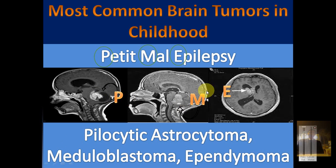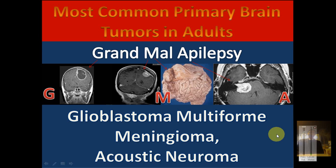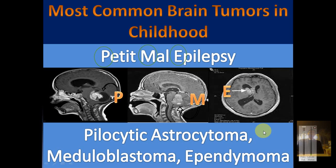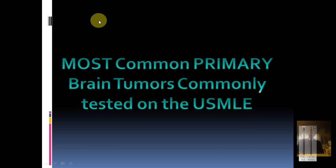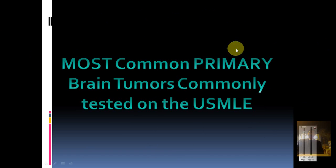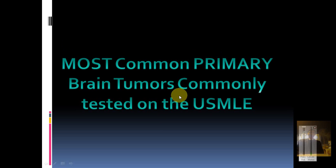To summarize: for adults use GMA, for kids use PME. Remember glioblastoma multiforme has pseudopalisading cells; meningioma has psammoma bodies with a history of seizures or limb paralysis over a long course of six months to a year; and pilocytic astrocytoma has a cystic cavity with a solid nodule at the periphery. If you're new to the channel, please subscribe, rate, and comment. See you in the next video!